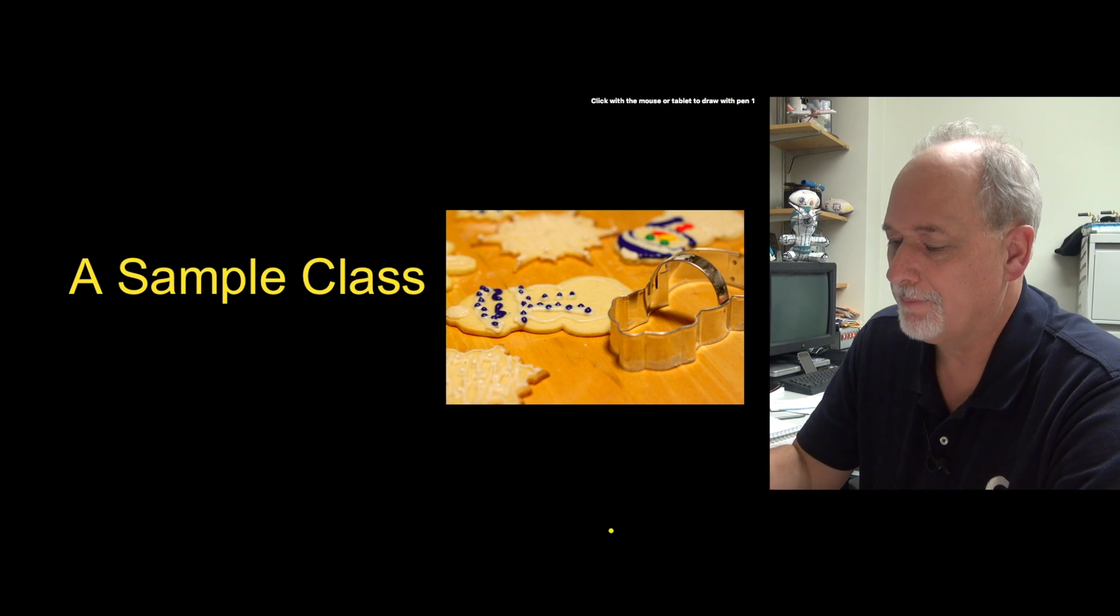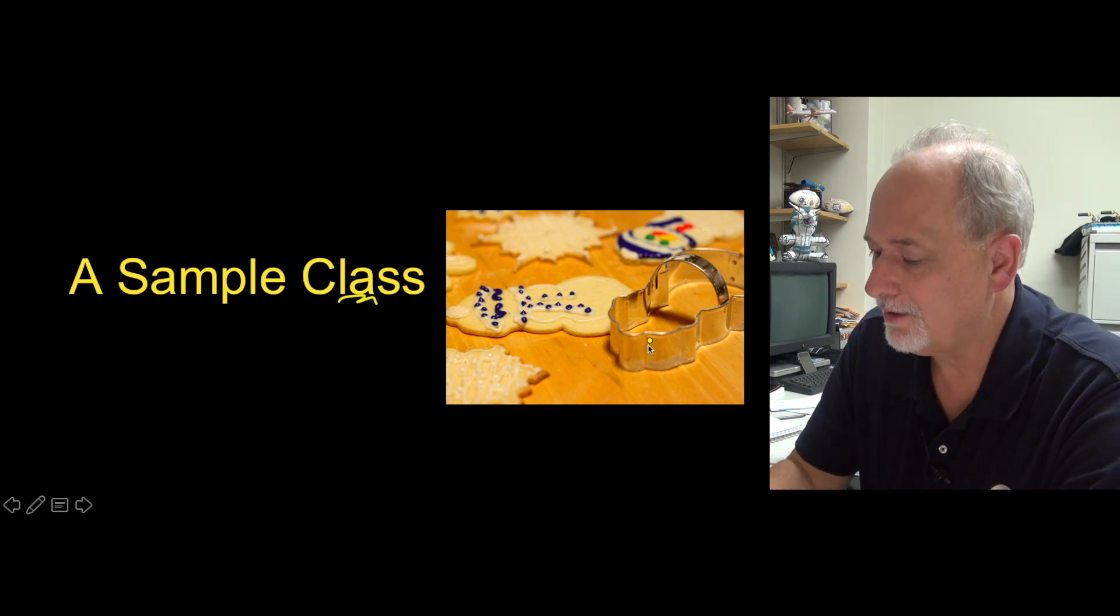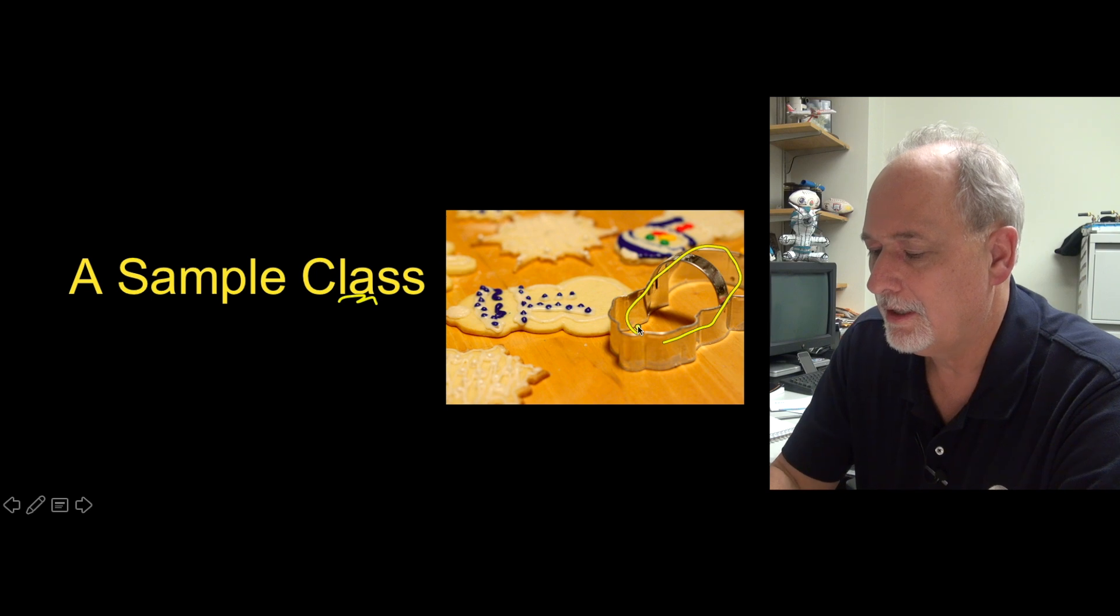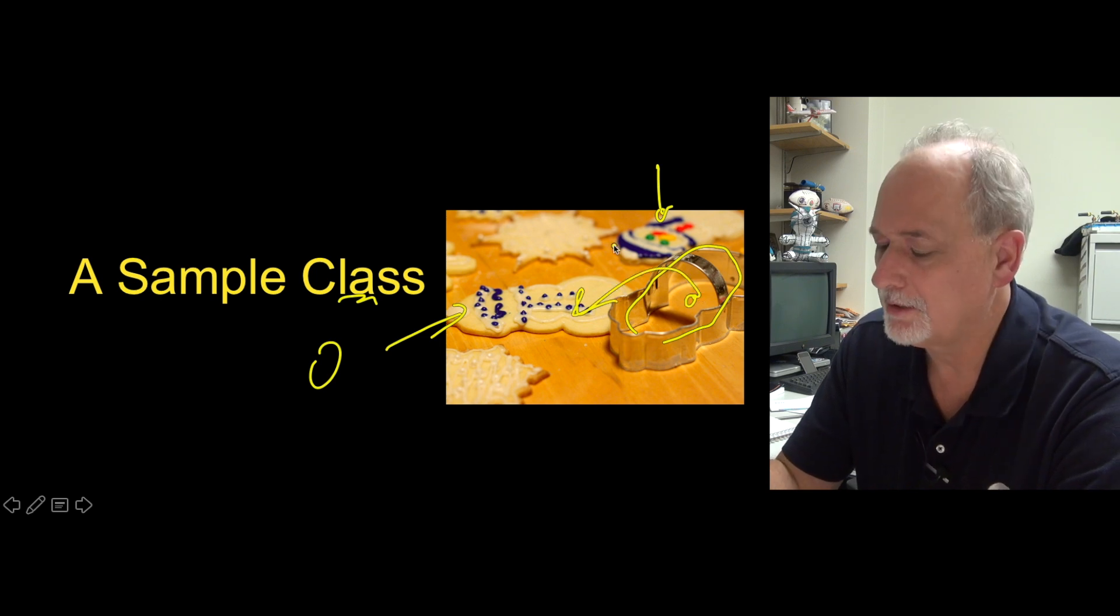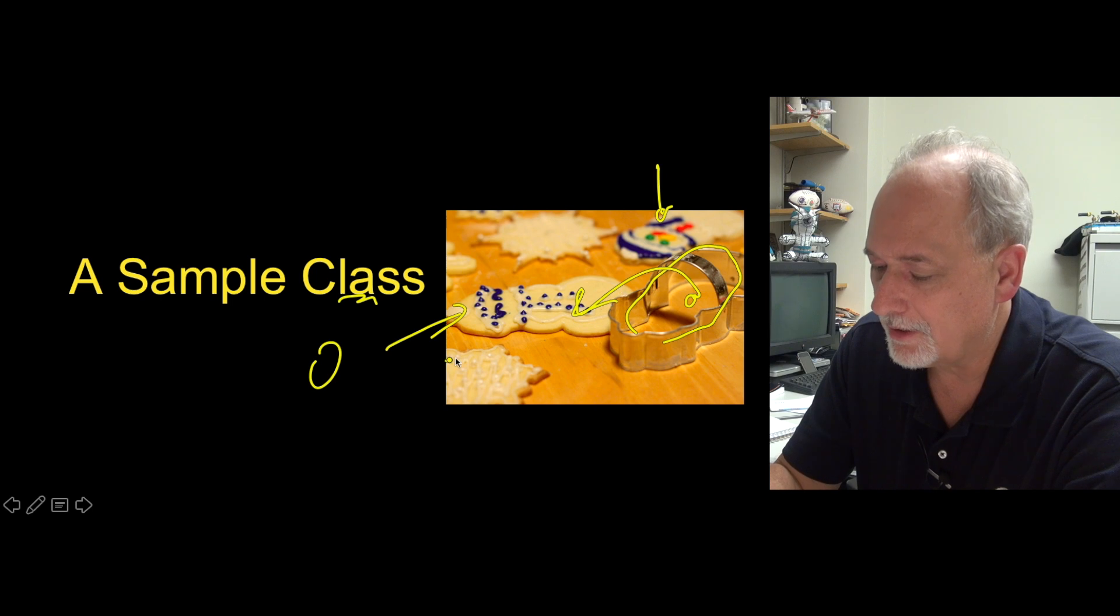So remember that a class is a template. It's not the actual thing. An object is an instance of a class. So you have to take the class and do something to make the object. And actually you can see here some other classes. There's clearly a sort of a snowflake class and a gingerbread man class.